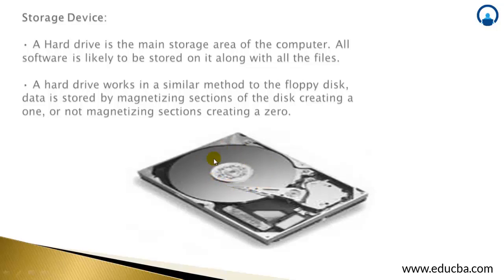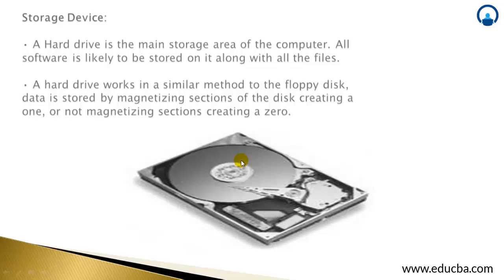The reason it is called a magnetic disk: a hard drive works in a similar method to a floppy disk. Data is stored by magnetizing sections of the disk, creating a 1, or not magnetizing sections, creating a 0. Even in interviews, IT engineers are asked what a hard disk is. The proper answer is: a hard disk is a magnetic disk.